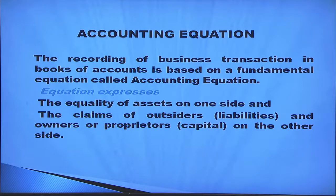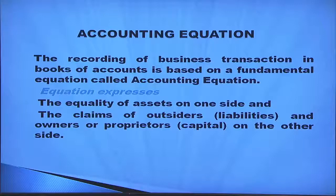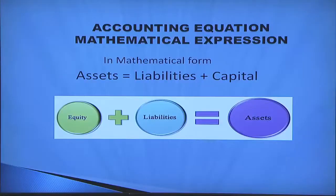The recording of business transactions in books of accounts is based on a fundamental equation called the accounting equation. This equation expresses the equality of assets on one side and the claim of outsiders — that is, liabilities — and the owner's claim — that is, capital — on the other side. So, assets equals liabilities and capital, expressed mathematically as: Assets = Liabilities + Capital. Here, equity means capital.